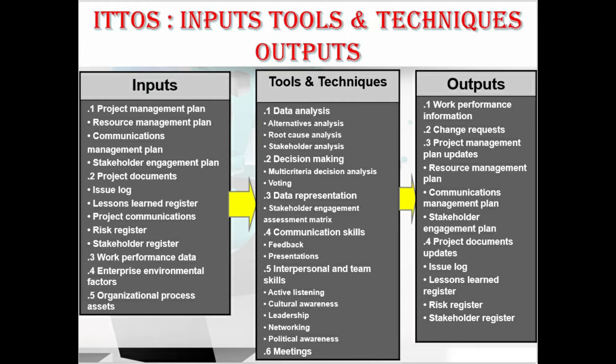Let's go through the ITTOs. In inputs, we have the project management plan, which contains the resource management plan, communication management plan, and stakeholder engagement plan. We also have project documents, which contain the issue log, lessons learned register, project communications, risk register, and stakeholder register. Additionally, inputs include work performance data, enterprise environmental factors (EEFs), and organizational process assets (OPAs).